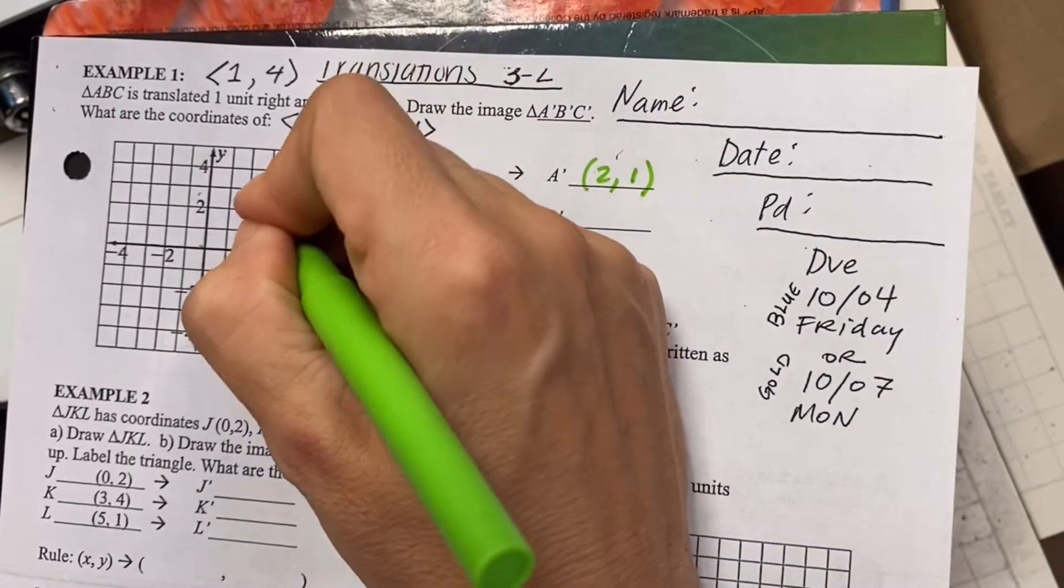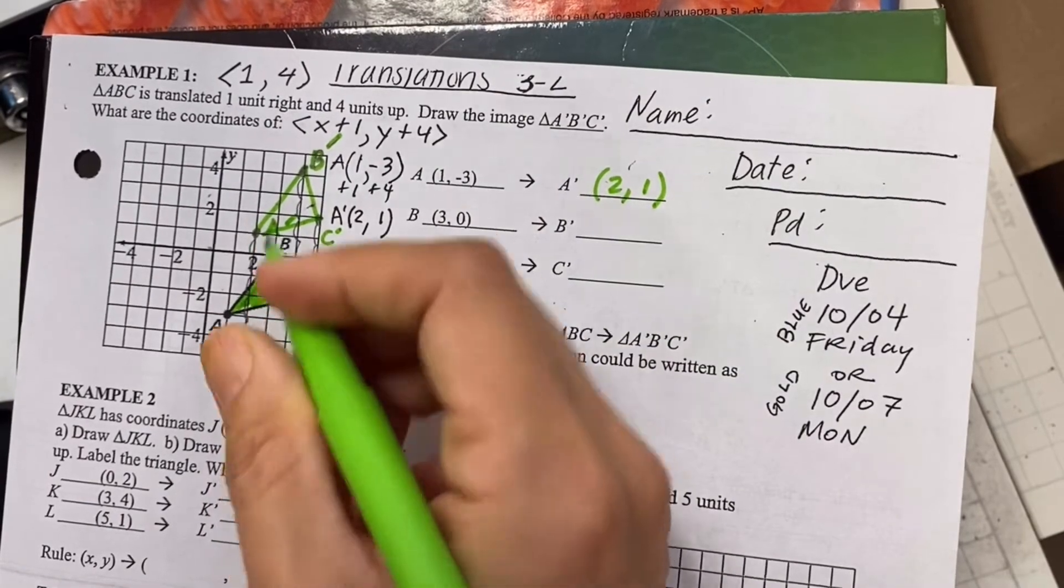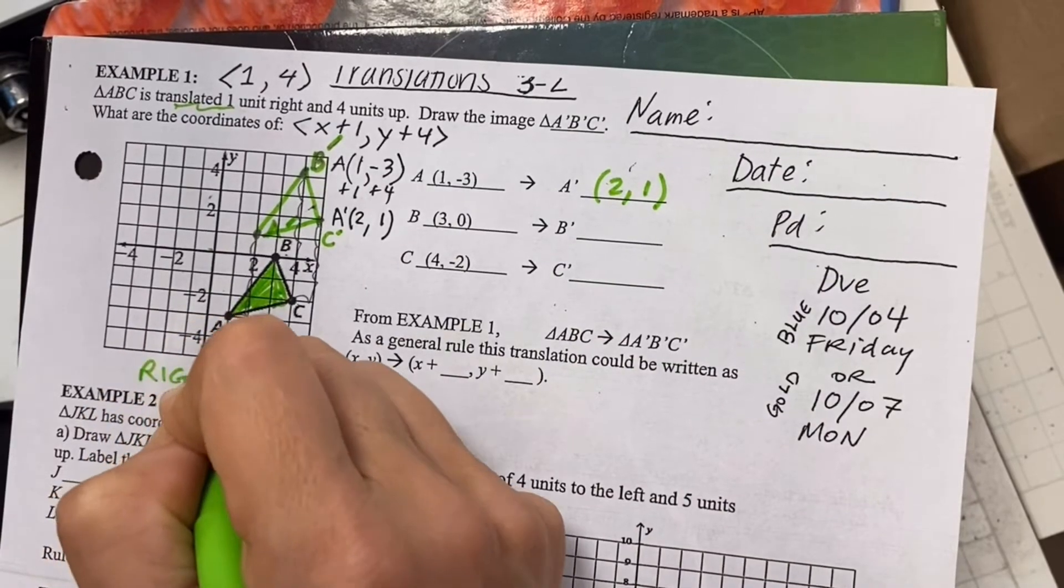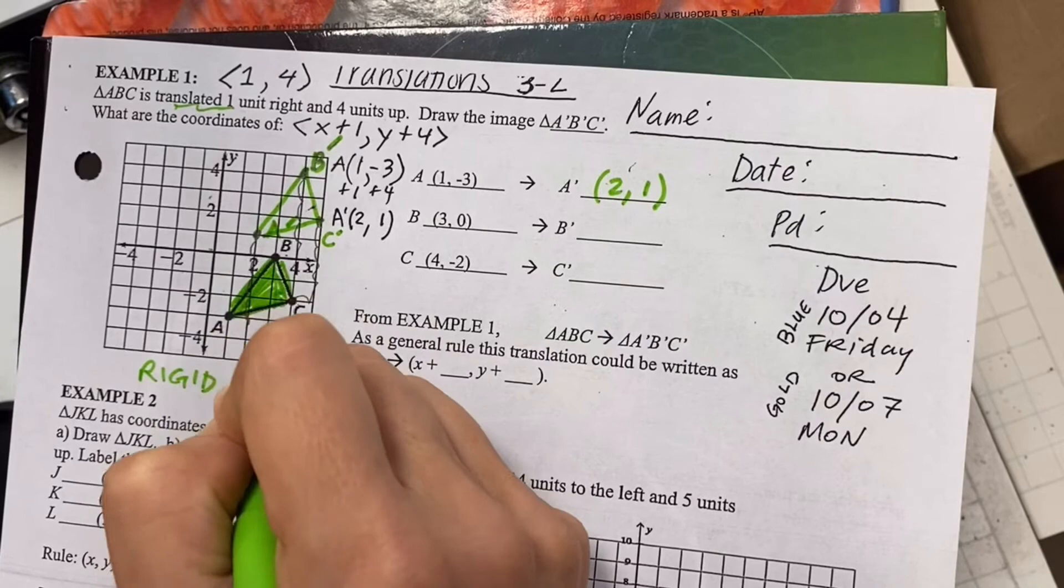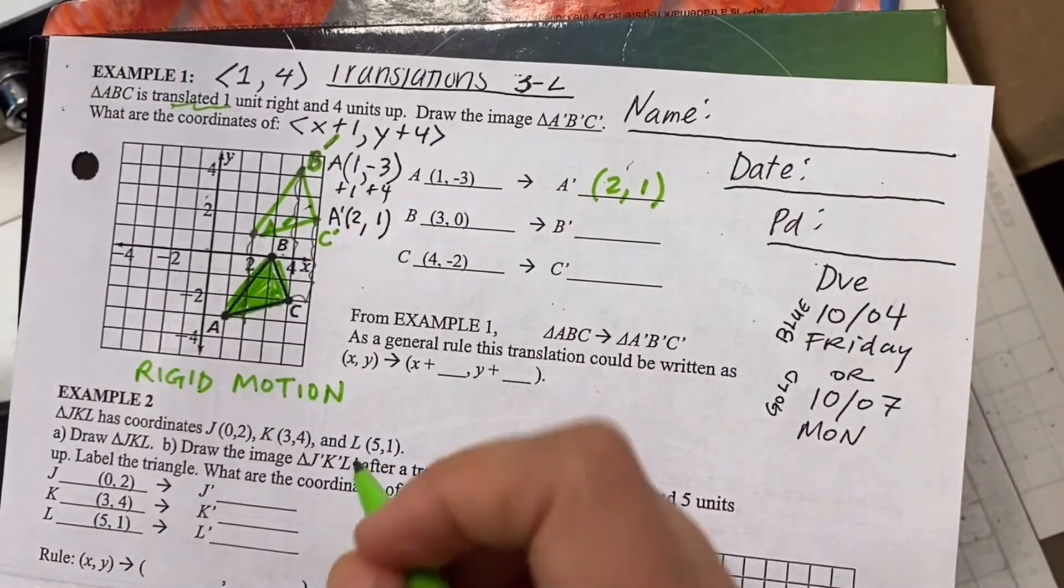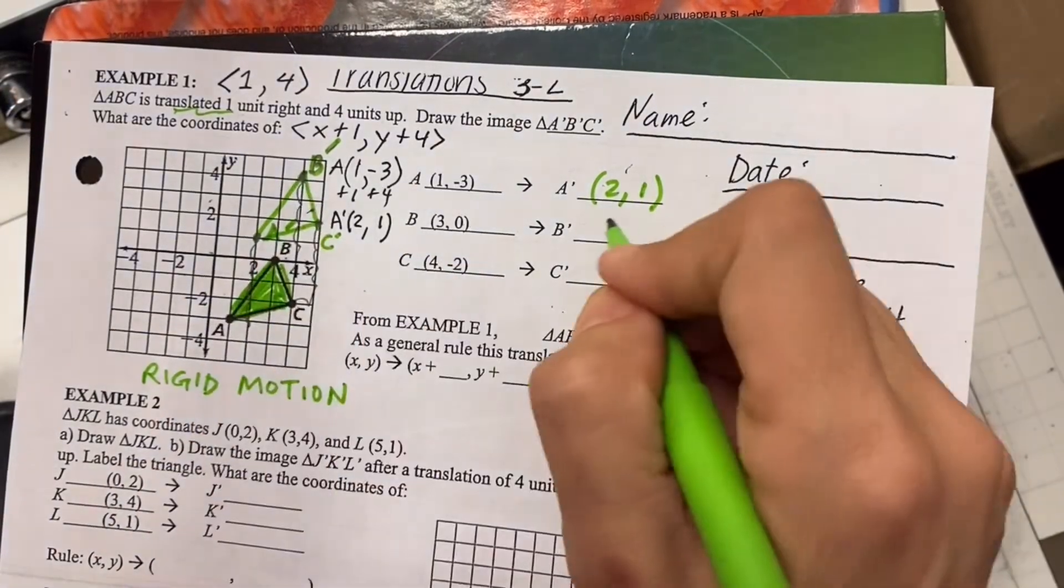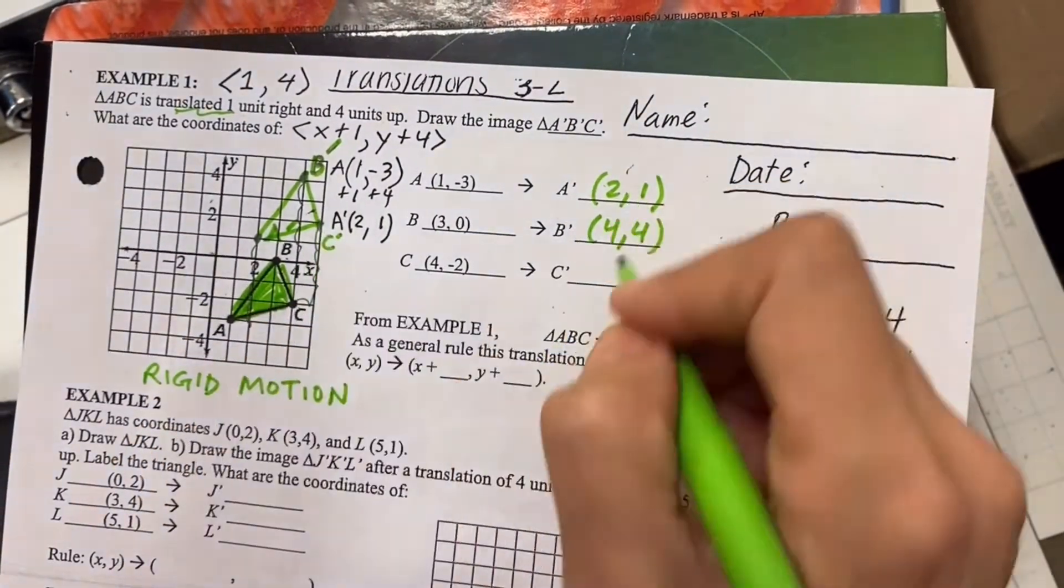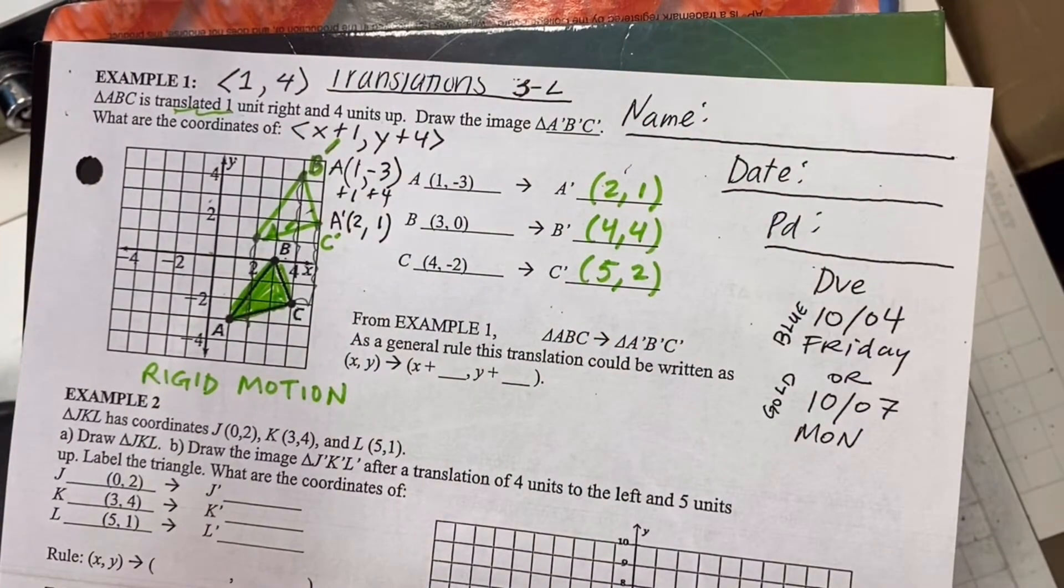So this is called rigid motion, meaning that the size of this shouldn't change when you translate it. So that's why it's called rigid motion, meaning hard, firm, doesn't get bigger or smaller. Move something, but allow these to not stretch or shrink. So let's look at our new B location, four, four, and our new C location, five, two.